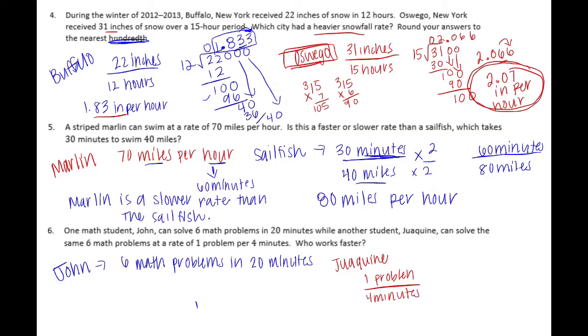There's multiple ways to do this, but I'm just going to figure out if it takes him 4 minutes for 1 problem, how much time would it take him for 6 problems? That would be 6 problems, 6 times 4 is 24 minutes, compared to John who solves 6 problems in 20 minutes. Who works faster? That would be John because he's finishing sooner. It takes him 20 minutes rather than 24 minutes.